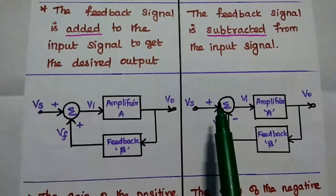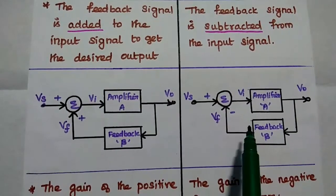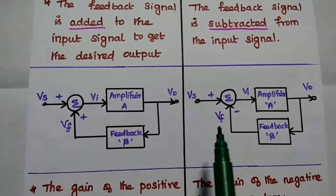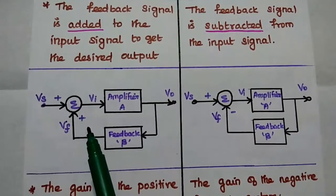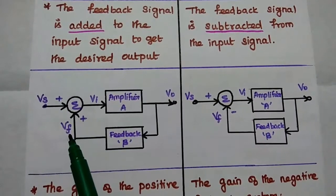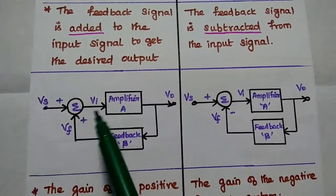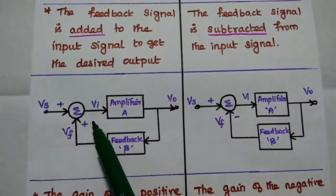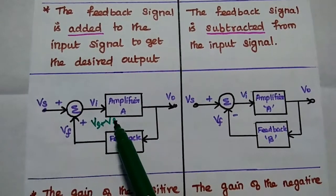This is the basic structure of positive feedback, and this one is for negative feedback. There is only one difference in this diagram. In positive feedback, we are going to add the feedback signal with the source signal to get VI. So here VI is nothing but V_ES plus V_F.